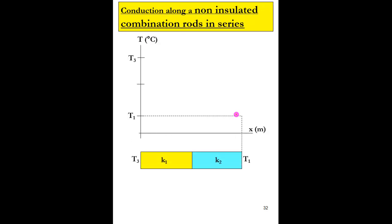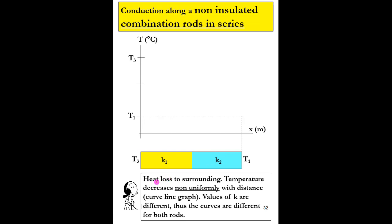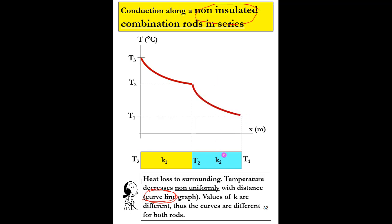For heat conduction along a non-insulated combination of rods in series, since the rods are non-insulated there will be heat loss to the surrounding, so the temperature decreases non-uniformly with distance and we get a curved line. Because the values of K are different for the two materials, the curves drawn for each rod are different. We draw two different curves: the first curve for material 1 with thermal conductivity K1, and the second curve for material 2 with thermal conductivity K2.